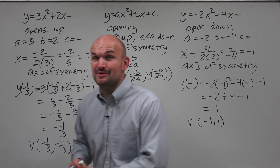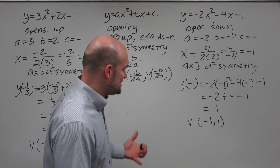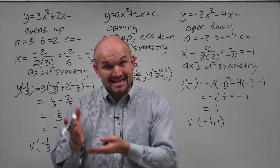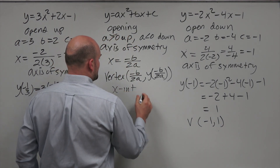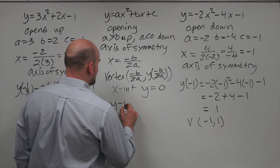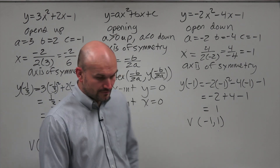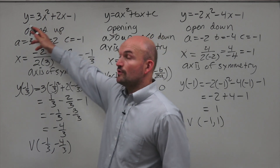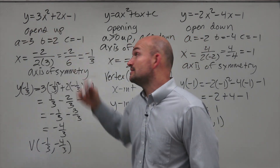Last but not least, we have to identify the x-intercepts and y-intercepts. The x-intercepts are where the graph crosses the x-axis — that's when y is equal to 0. The y-intercepts are when x is equal to 0. So we plug 0 in for y and solve for x to find x-intercepts, and plug 0 in for x to find the y-intercepts.